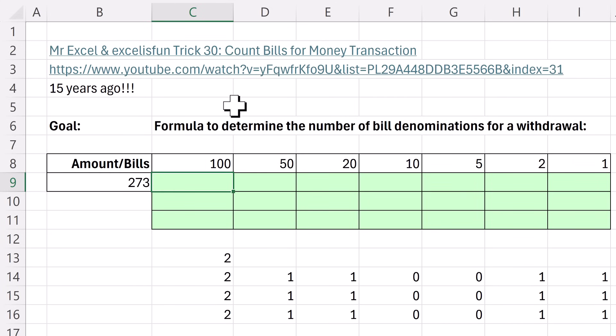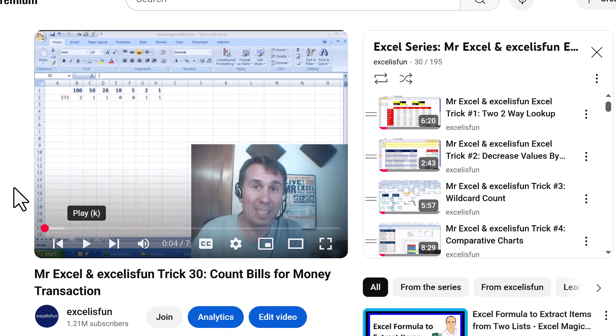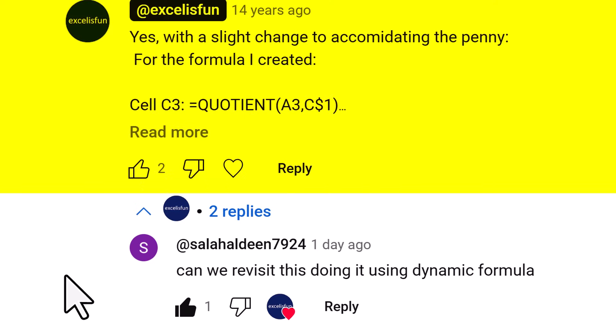Now 15 years ago, what was I doing? I was making a video with Mr. Excel and Excel is fun trick number 30. And the goal was simple. We needed to, from some initial amount, figure out how many of each bill denomination we needed. Now if you click this link and go watch, it's a funny watch because we were just kids. And yesterday in the comments, someone said, hey, can we revisit this and figure out how to do it with dynamic spill array formulas?